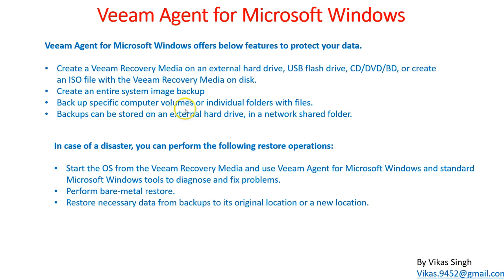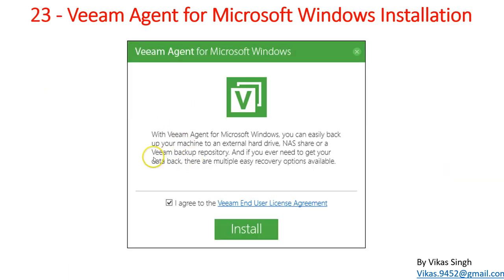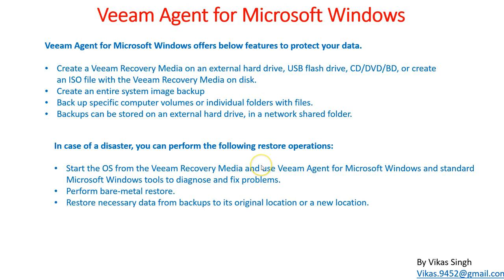We have the option to backup a specific computer volume or individual files and folders, so we can modify what we need to back up using this agent — either volume backup or individual folders and files. Backups can be stored on external hard drives, eSATA or SATA drives, or in a network shared folder, and we also have the option to save at the Veeam backup repository.